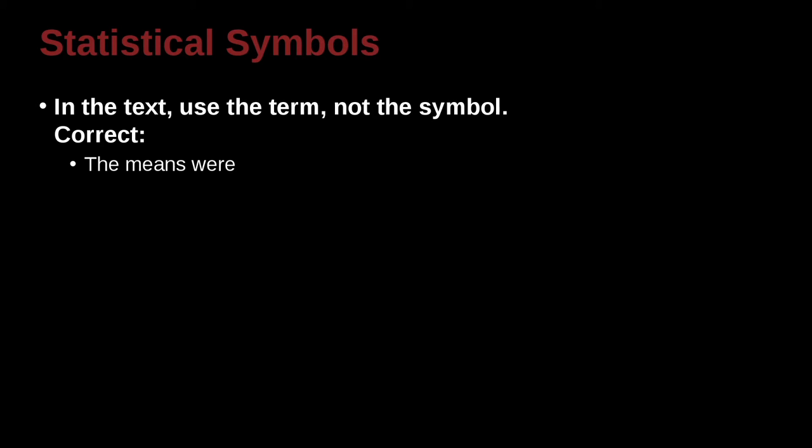For example, if I were to say something like the means were, I should use the word means here, multiple means. I would not say the M's, which is shorthand, M's for means, M for mean, M's for means. So the correct way would be to say the English word rather than use the symbol.